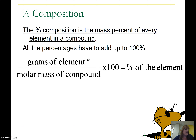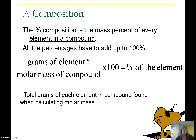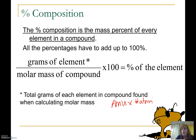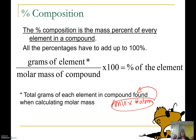How we're going to calculate percent composition: the equation is the grams of element — which we're going to get from the periodic table — divided by the total molar mass of the compound, times 100 to get our percent. The grams of the element is the total grams of each element found when we calculate molar mass: that atomic mass from the periodic table times how many atoms we have. That's what goes on top.